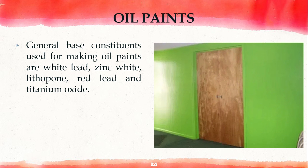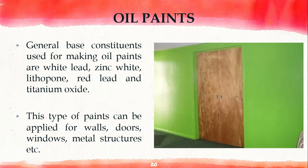Next are oil paints, which are normal paints containing a base and a vehicle — that is, a pigment and a binder. Common bases used are white lead, zinc white, lithopone, red lead, and titanium oxide. Vehicles used include linseed oil and tung oil. Dryers and color pigments are also added; dryers may be litharge, red lead, zinc sulfate, and manganese sulfate. Oil paints are very economical, easy to apply, and generally applied in three coats of varying composition, for walls, doors, windows, and metal structures. The main disadvantage is that they are not suitable for humid weather conditions.